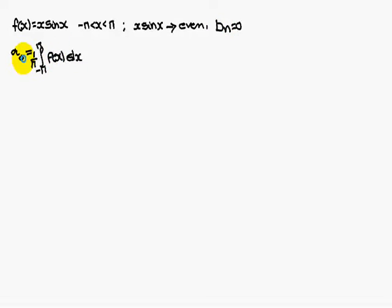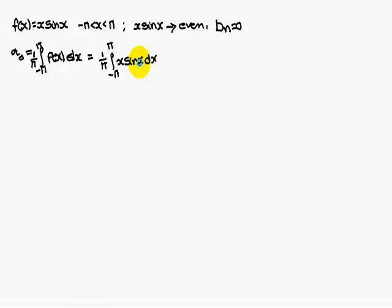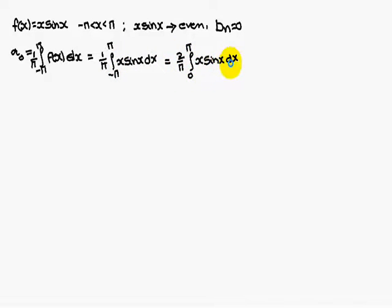We have to find a0. a0 is equal to 1 by pi times the integral from minus pi to pi of f(x) dx. That is equal to 1 by pi times the integral from minus pi to pi of x sin x dx. Since this is an even function, we can write it as 2 by pi times the integral from 0 to pi of x sin x dx.